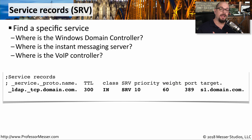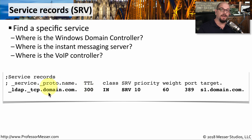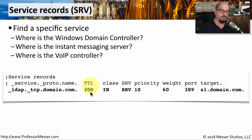There are also DNS records that can help you find particular services on your network. You could create a service record, or SRV record, that would allow Windows devices to find Windows domain controllers on the network, or you might add a service record so that voice over IP devices can find the centralized voice over IP controller. Here's the service record used for Windows devices to find an Active Directory controller. You can see the service is LDAP, the protocol name is TCP, the domain is domain.com, the time to live is 300 seconds, the class is internet, and the record type is SRV. There are priority and weight values, a port number, and a target that associates this service with a particular device.